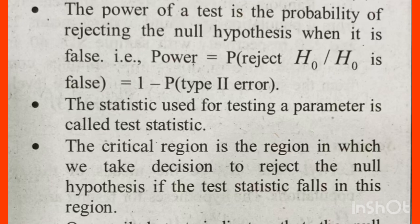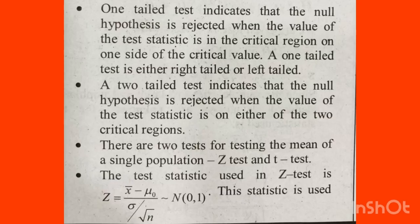The statistic used for testing a parameter is called the test statistic. The test statistic is the value we compute and use to test the parameter. Another important concept is the critical region — the critical region is a region in which we take the decision to reject the null hypothesis if the test statistic falls in the rejection region.